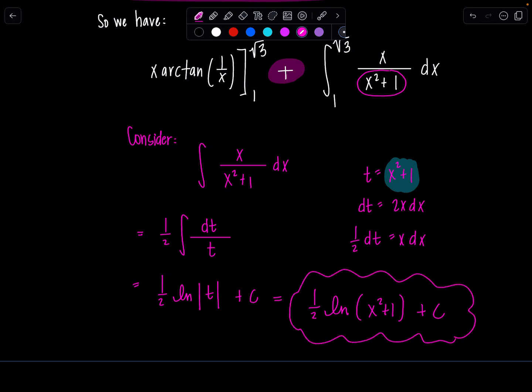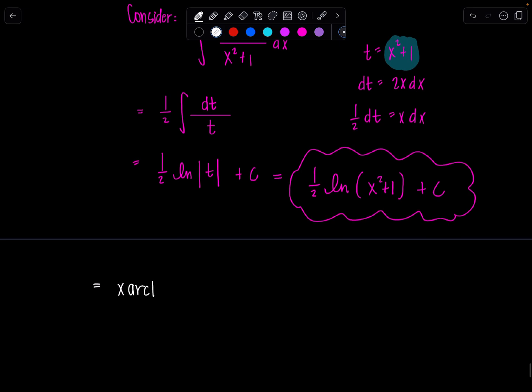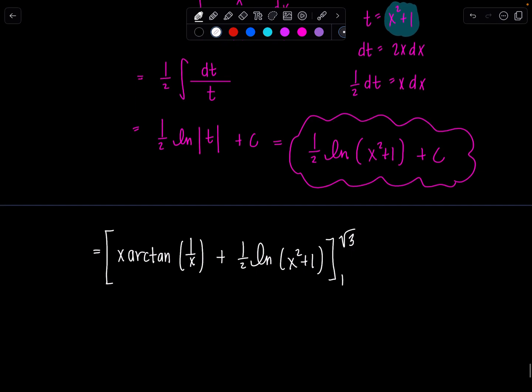So this, now I have the antiderivative of this integral. And so I can put everything together and then evaluate this along with this term from 1 to rad 3. And then I didn't switch my limits. So here we have now x arc tan of 1 over x plus 1 half ln x squared plus 1. No plus c. This is a definite integral from 1 to rad 3.